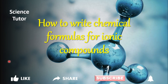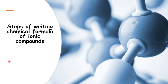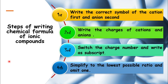The crisscross method is really useful to write formulas of ionic compounds. For that we can use four simple steps. In the first step, write the correct symbol of the cation first and the anion second. In the second step, write the charges of cations and anions. Third step, switch the charge numbers and write as a subscript. Fourth step, simplify to the lowest possible ratio and omit one.